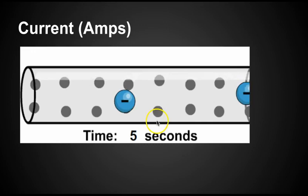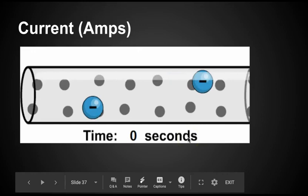When it comes to current, which is measured in amps, think of it this way. Think of it how many electrons are flowing a certain distance in a certain amount of time.